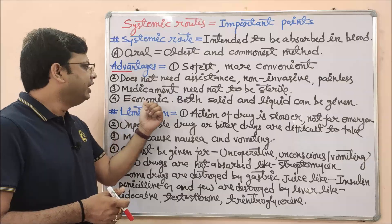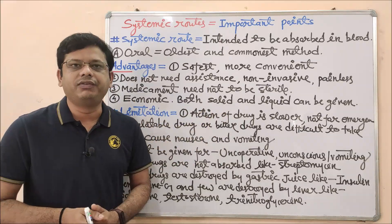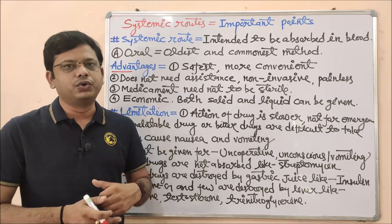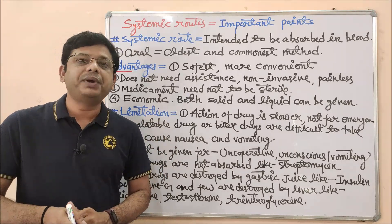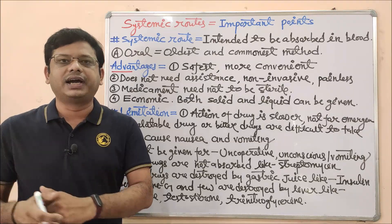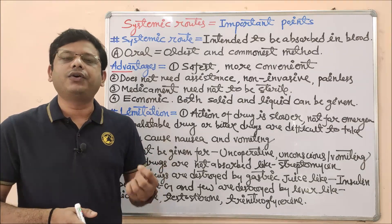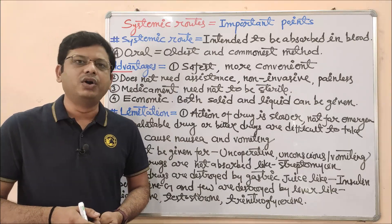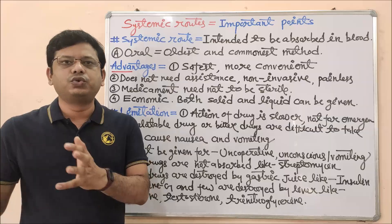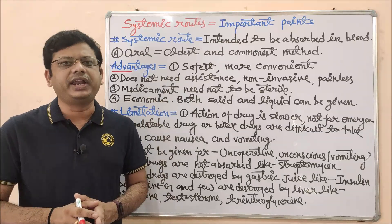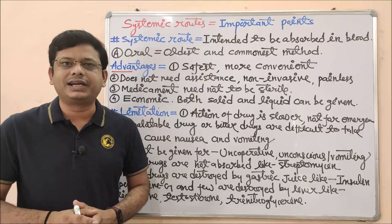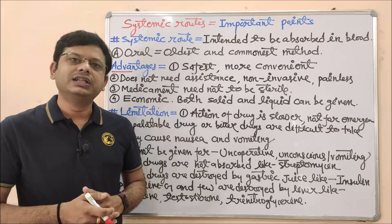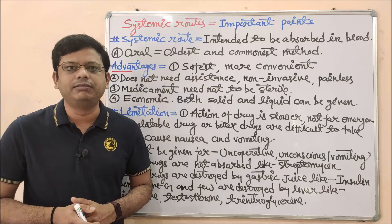The next advantage is that it is economic. Both solid and liquid can be given. The oral route is one of the most economical routes of drug administration — prices range from about 2 rupees to 20 rupees, or even 50 paise, and can be variable. In contrast, the parenteral route, transdermal patches, or inhalation route may be costlier. So this route is affordable for any age group.